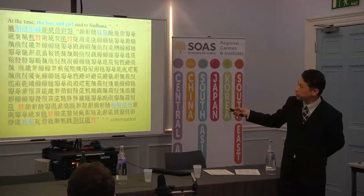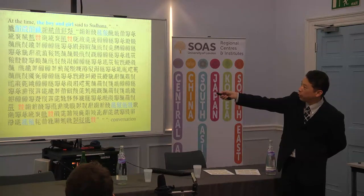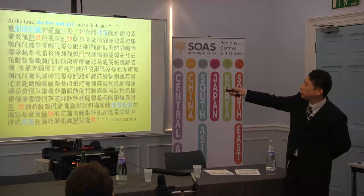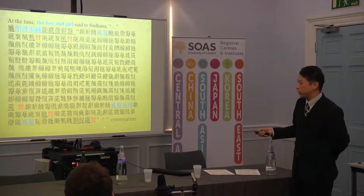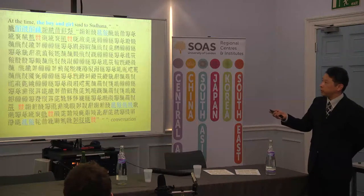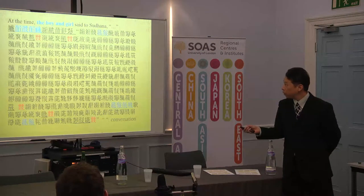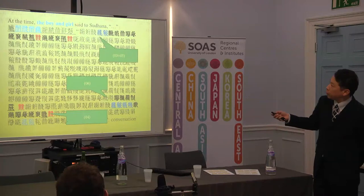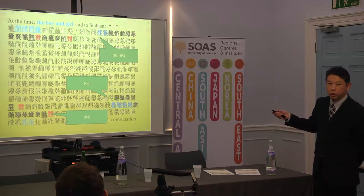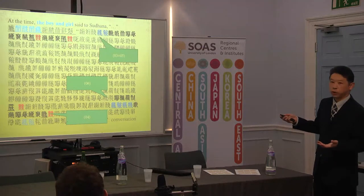The first part means: at the time, the boy and girl say to the sultana — boy and girl, two persons. From here to the end of these lines, they are just inside a conversation. So we return to our samples from here to here, and we can observe such sentences including the suffix qi.